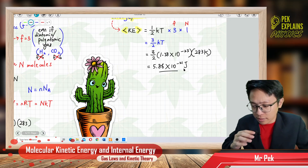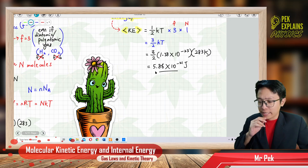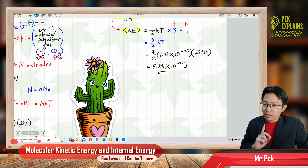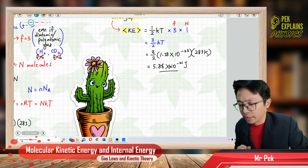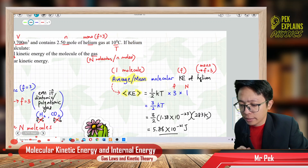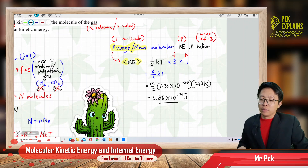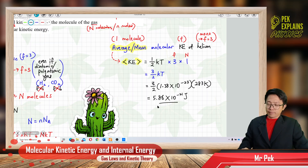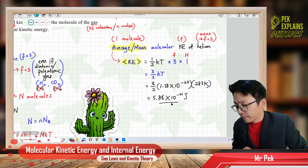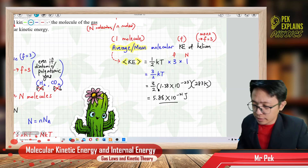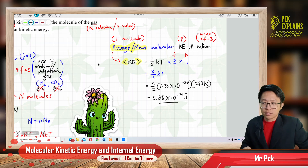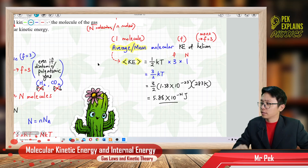This is the kinetic energy for one molecule. Helium has only 3 degrees of freedom, so the value used is 3. That's it for this question. See you in the next video.